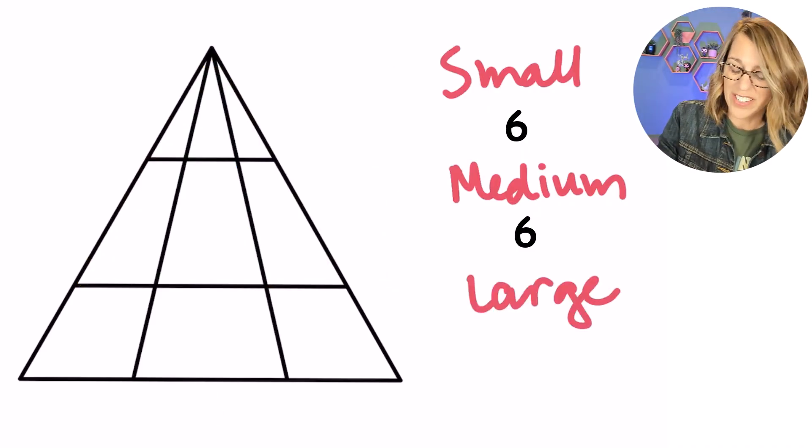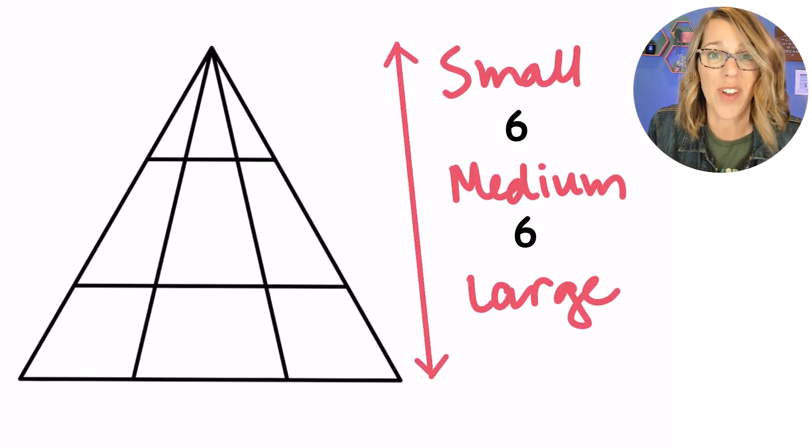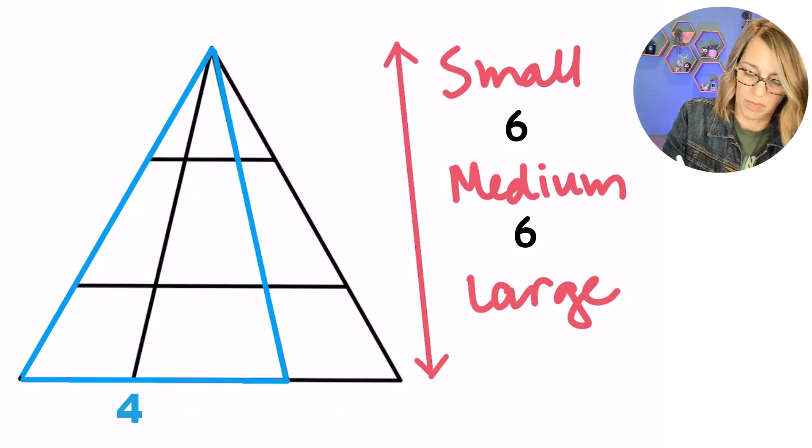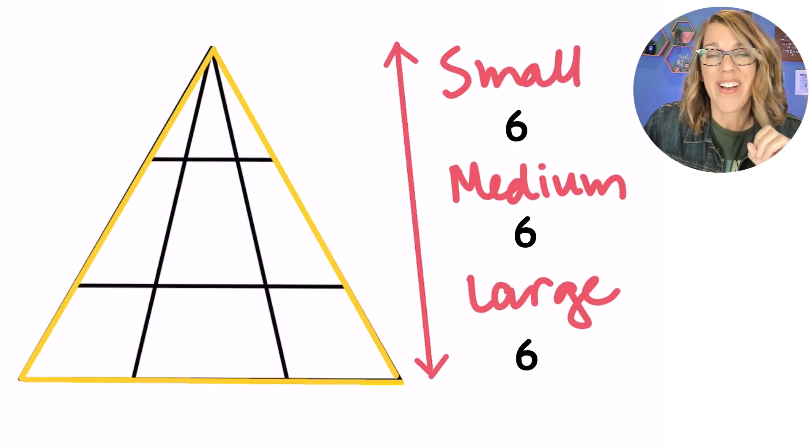Finally, we've got those largest triangles. Let's count up those largest triangles. There are six more, which gives us a total of 18.